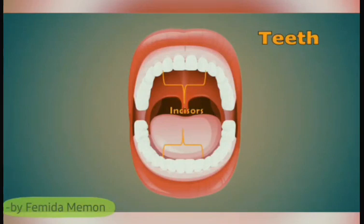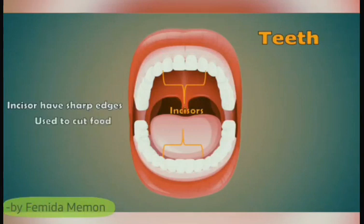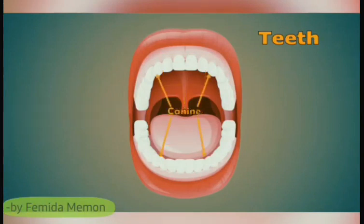Incisors: There are eight incisors located in the front portion of the mouth — four in the upper jaw and four in the lower jaw. Incisors have sharp edges that are used to cut food.